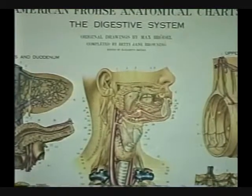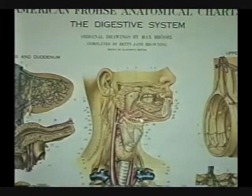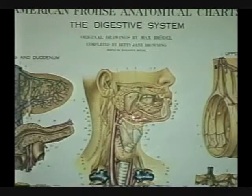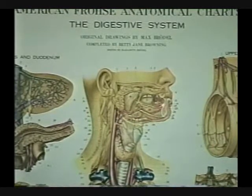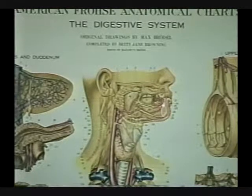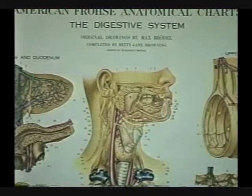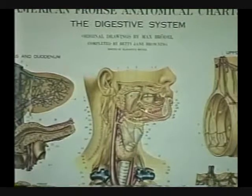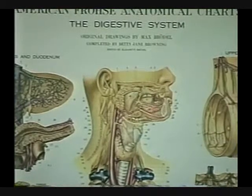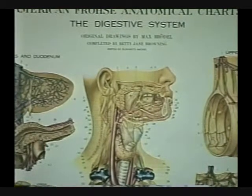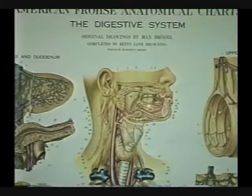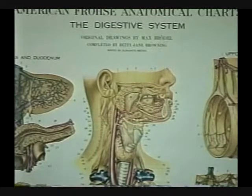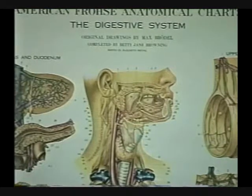And this gland here is the submandibular. It's going to empty right behind the incisor. And then this particular gland is the sublingual. And it's going to empty all along the side of the base of the tongue.